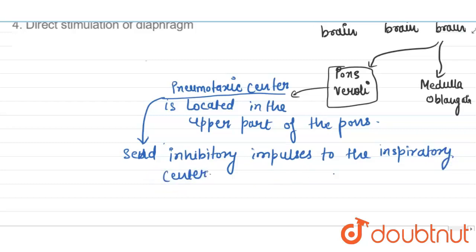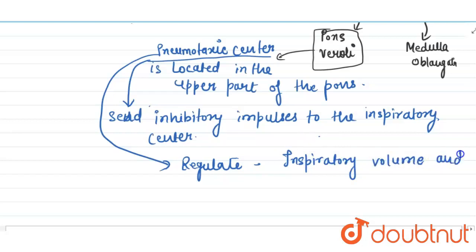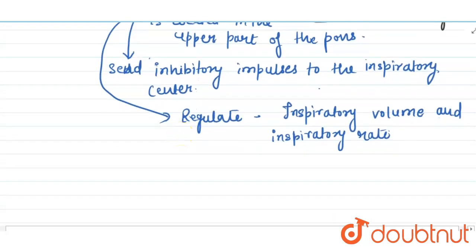These inhibitory impulses to the inspiratory center help in terminating inspiration and thereby regulating the inspiratory volume and inspiratory rate. So this center mainly regulates inspiratory volume. This center is likely involved in the fine tuning of breathing, responsible for fine tuning of breathing.